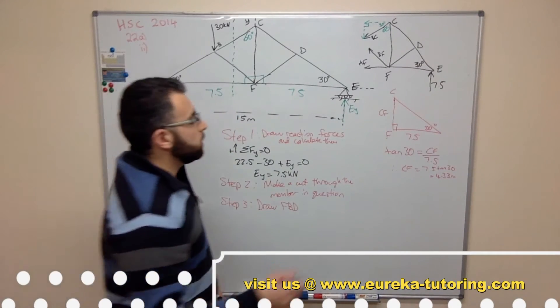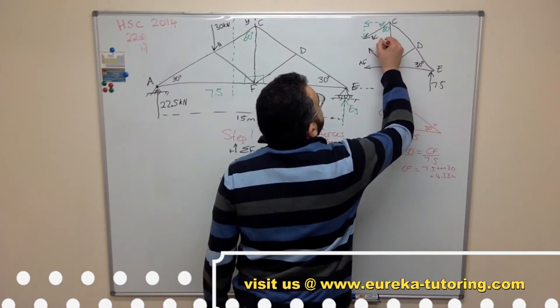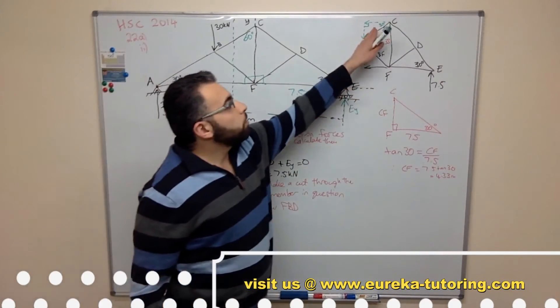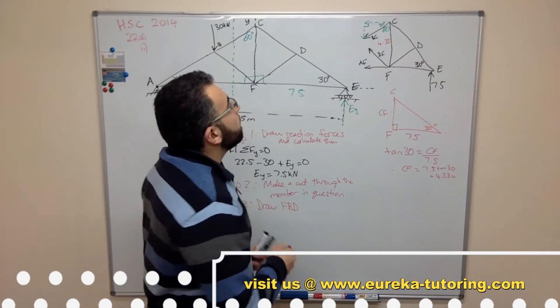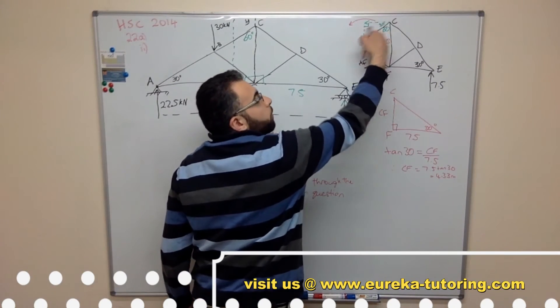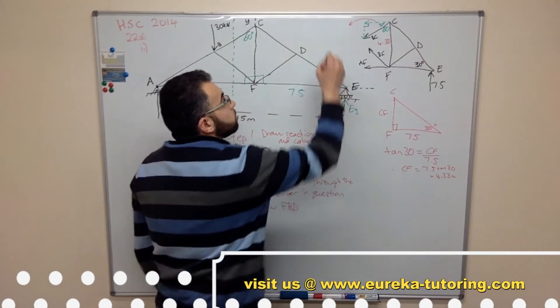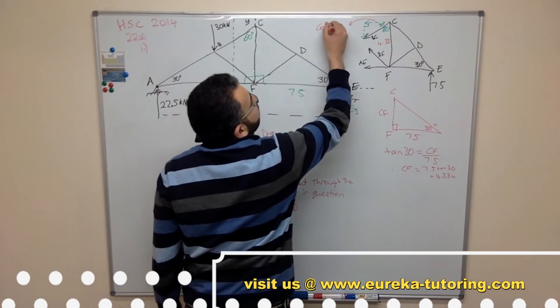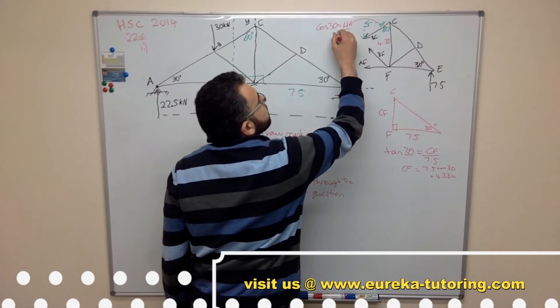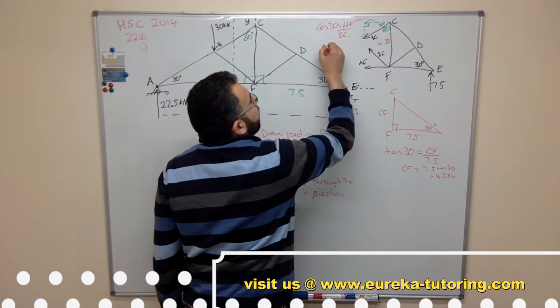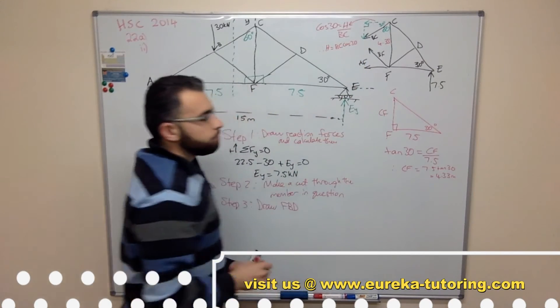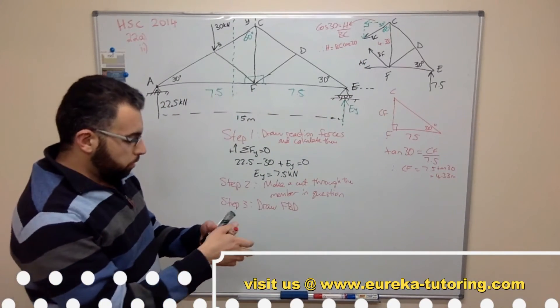Okay, so now we know what the value of CF is, which is 4.33. Now the next step I need to do is figure out what the horizontal component of BC is. So this is the side that I'm interested in - this is adjacent, this is hypotenuse. So adjacent on hypotenuse is cos. So cos 30 equals H horizontal over hypotenuse which is BC. Therefore H equals BC cos 30.